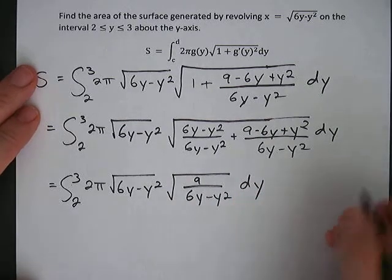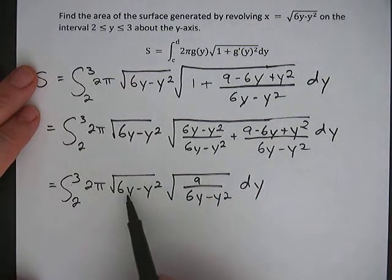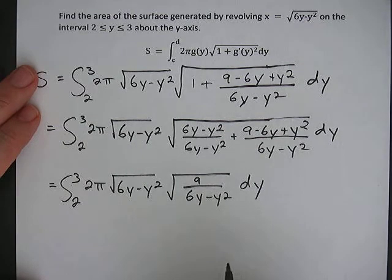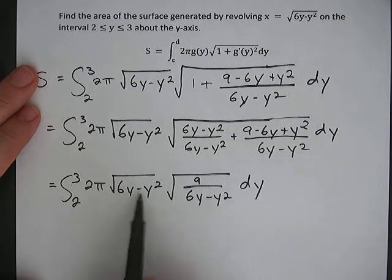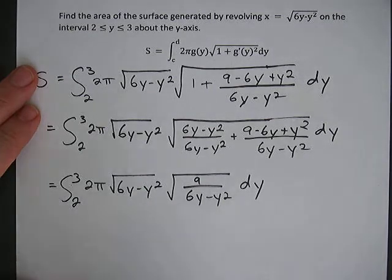Okay, now in our next step, we're going to multiply this radical by this radical, which will basically mean that this 6y minus y squared and this 6y minus y squared will cancel.